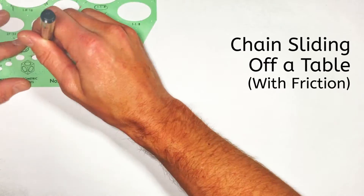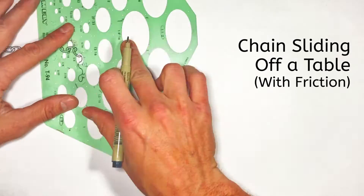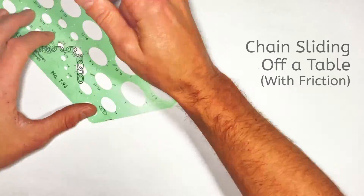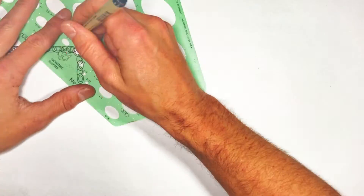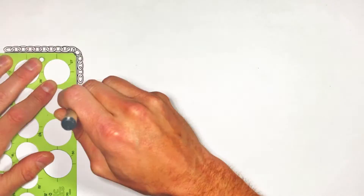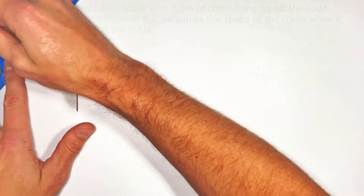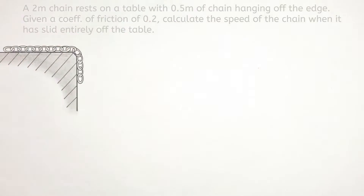Today we're looking at a chain which is hanging partially off the edge of a table. We're going to release this chain from rest and allow it to accelerate until the entire chain has come off the edge of the table.